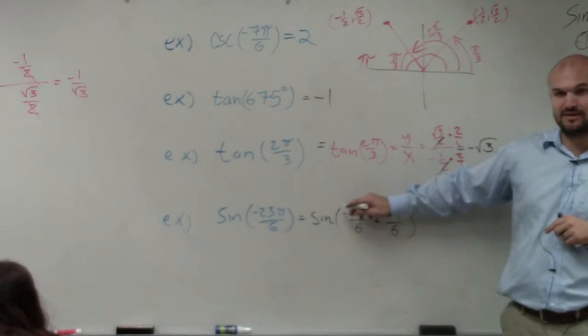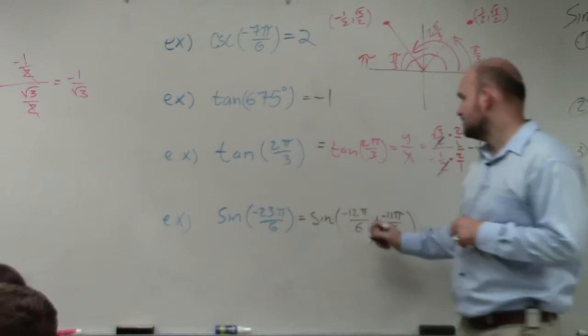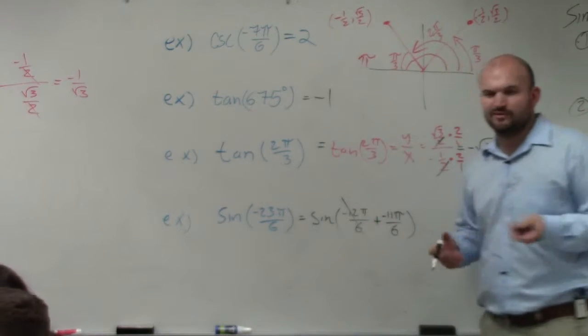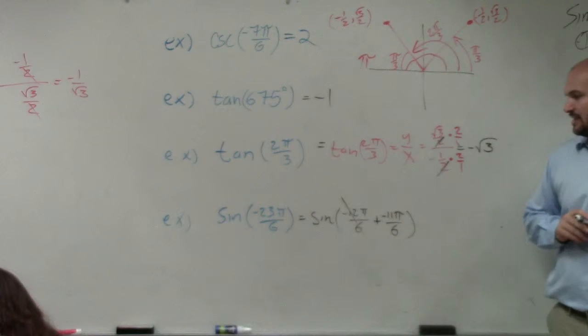However, this is just a period, right? So we get rid of it. We don't really need it. So now we need to find 11 pi over 6.